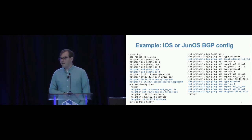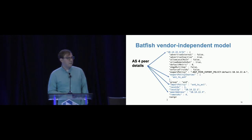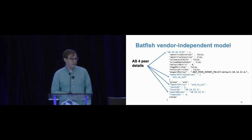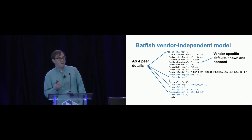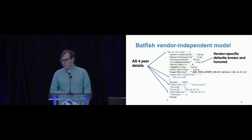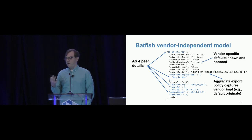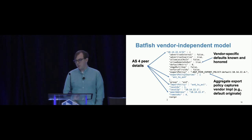On the left I have IOS config and on the right Junos config for BGP. The blue lines I've highlighted are roughly equivalent configuration across the two languages. In the internal data model for Batfish, we've unified this into a single JSON structure with details of the AS, vendor-specific defaults we know and honor, and we can track import and export policies. We can also build an aggregate export policy capturing details including vendor implementation-specific things like default originate.